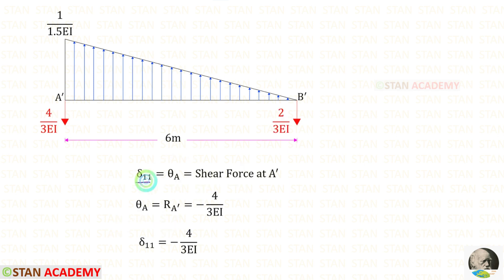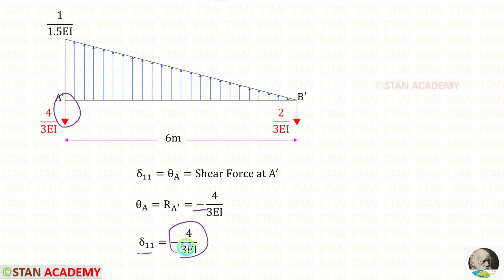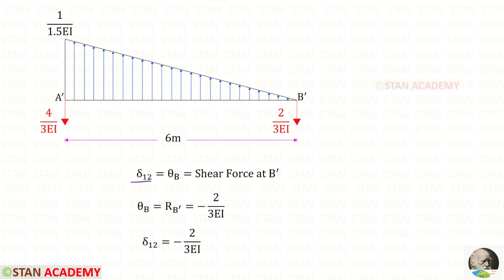Now let us find theta 1,1, the slope at point A which is the shear force at A dash in the conjugate beam, equal to RA dash. Since RA dash acts downwards, it is negative. For theta 1,2, the slope at point B equals RB dash, which also acts downwards and is therefore negative.